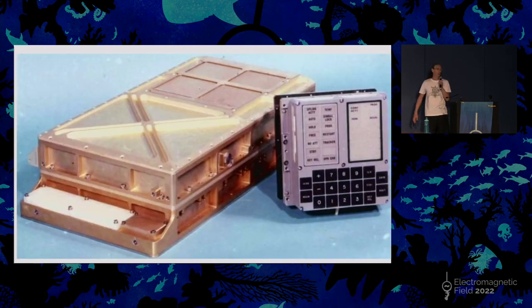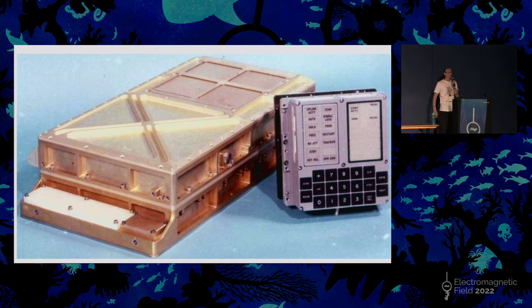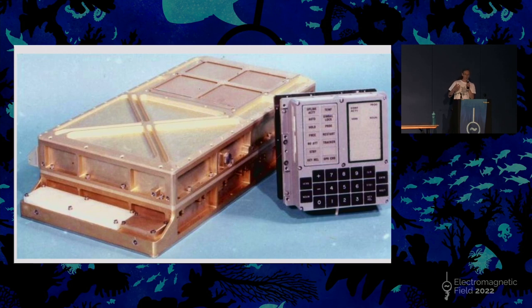This is what it looked like. The goldish colored box on the left is the computer; the thing on the right is the DSKY, the main interface the astronauts used to talk to it. It was a sealed unit, milled out of beryllium. They originally considered making it user-serviceable with replaceable modules for in-flight servicing, but ultimately decided that making the whole thing sealed would be more reliable in the long run — so totally sealed, no user-serviceable parts.